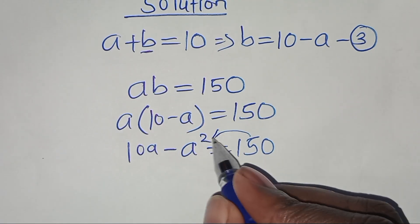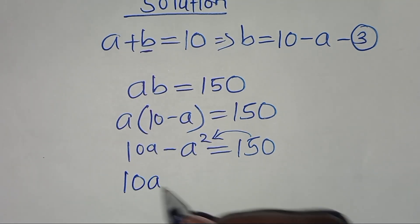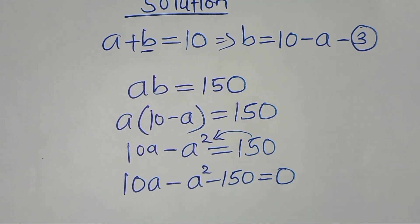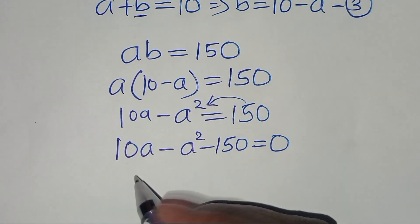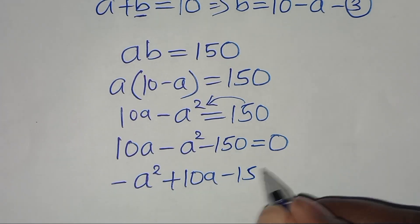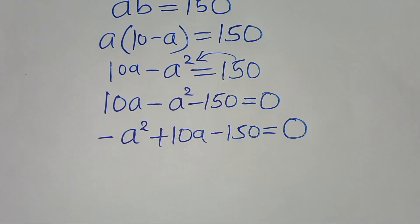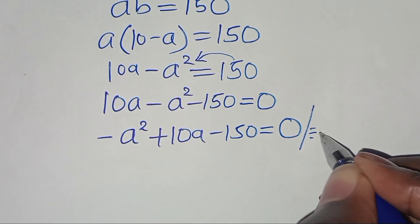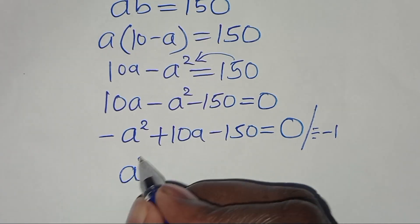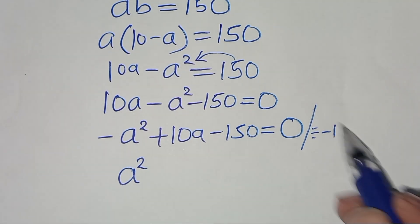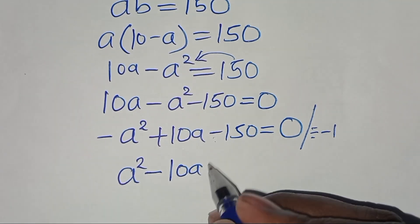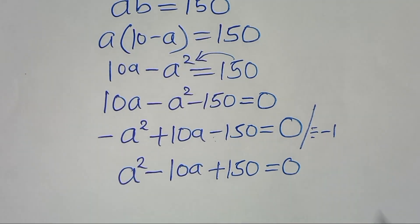Let's take 150 to the left-hand side, so we have 10a minus a squared minus 150 equals 0. Rearranging, we have minus a squared plus 10a minus 150 equals 0. Now let's divide everything by minus 1, so we get a squared minus 10a plus 150 equals 0.